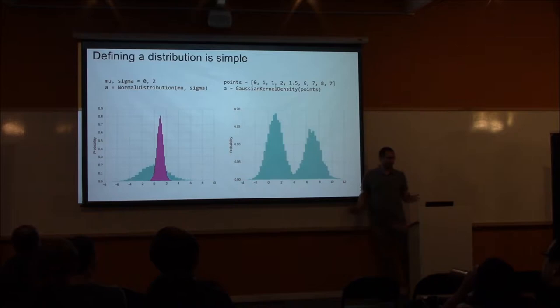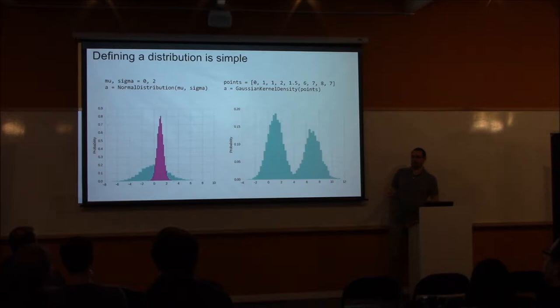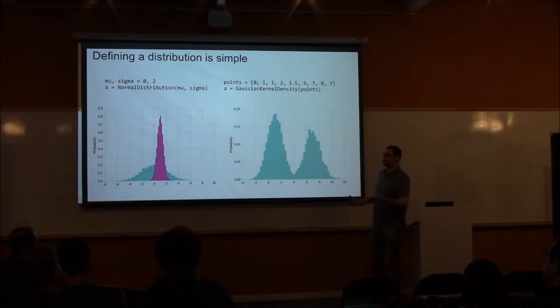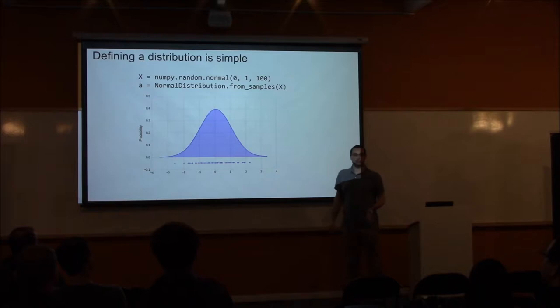I wanted to show how simple this is. There are some packages where it's complicated to make even the most obvious methods work. If you wanted to fit a normal distribution, it has one line of code. If you want to create a Gaussian kernel density — a non-parametric distribution — it has one line of code passing two points. Pomegranate not only supports those as basic distributions, but supports kernel densities and other types in all of its models, since it has this modular framework.